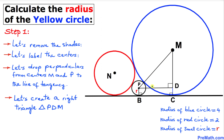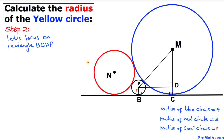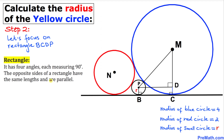Now let's focus on rectangle BCDP. By the definition of a rectangle, it has four 90-degree angles and opposite sides are equal and parallel. So if one side is r, the opposite side is r as well, and the other pair of opposite sides are also equal in length.